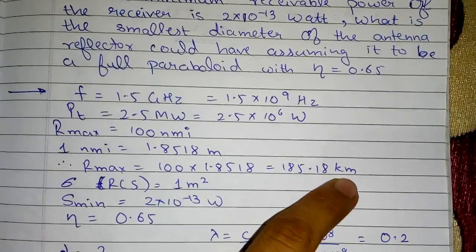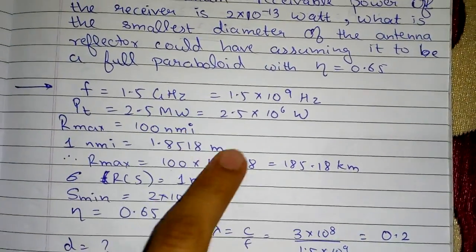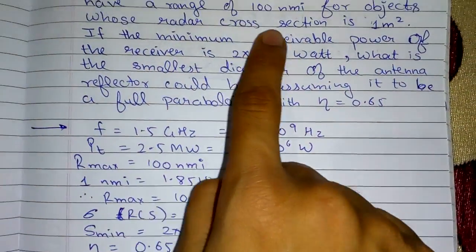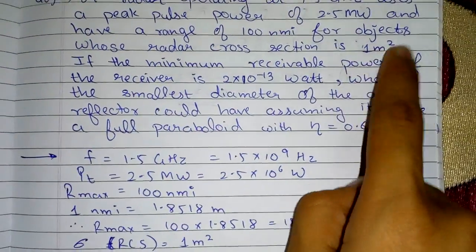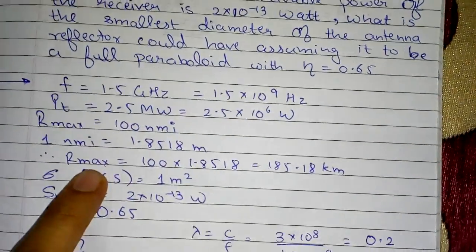So 100 NMI will be 100 into 1.8518 which gives me answer as 185.18 kilometers. Next is this radar cross section which is 1 meter square, this is also called as Sigma.